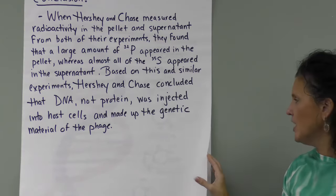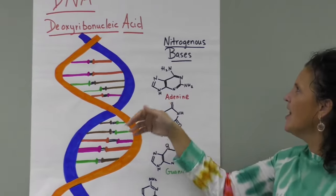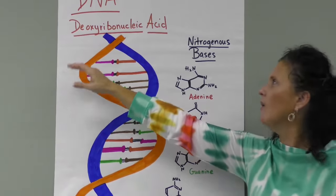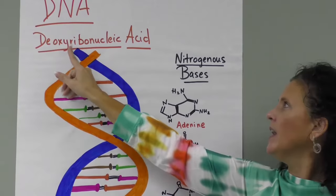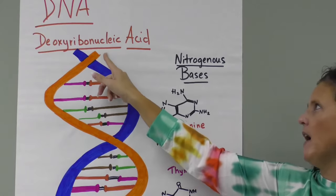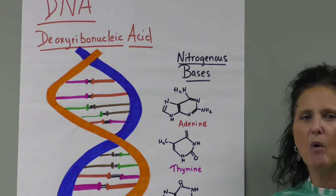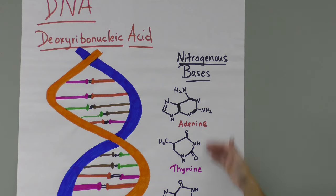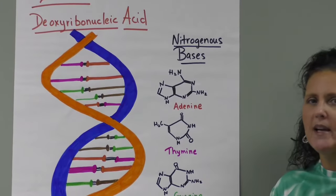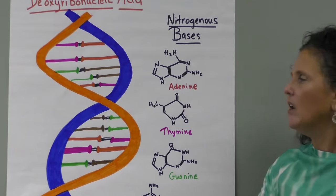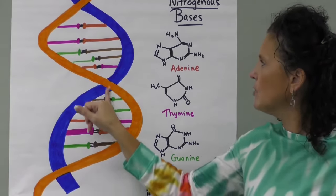Now that we've confirmed DNA carries our genetic code, here is a diagrammatic representation of DNA. DNA stands for deoxyribonucleic acid — 'deoxy' meaning an oxygen has been removed, 'ribo' referring to the ribose sugar, 'nucleic' because it was found in the nucleus, and 'acid' because of the acid group. It has a double helix structure. The four bases are adenine, thymine, guanine, and cytosine — the only four bases in DNA. Adenine always binds with thymine, and guanine always binds with cytosine, held together by hydrogen bonds.